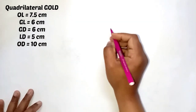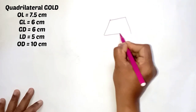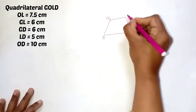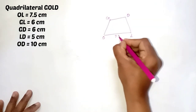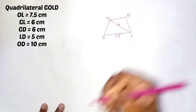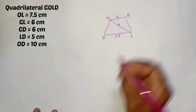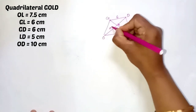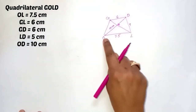Draw the rough sketch first — quadrilateral GOLD. What is given: OL is equal to 7.5 cm, GL is equal to 6 cm — GL means one diagonal, 6 cm. GD is equal to 6 cm — another side. LD is equal to 5 cm. OD is equal to 10 cm. So first you have to construct triangle OLD.